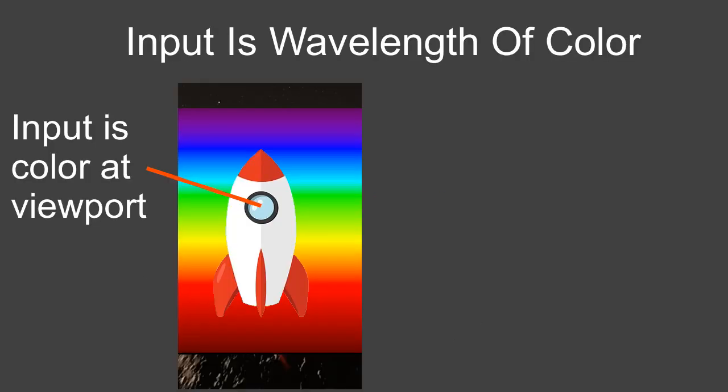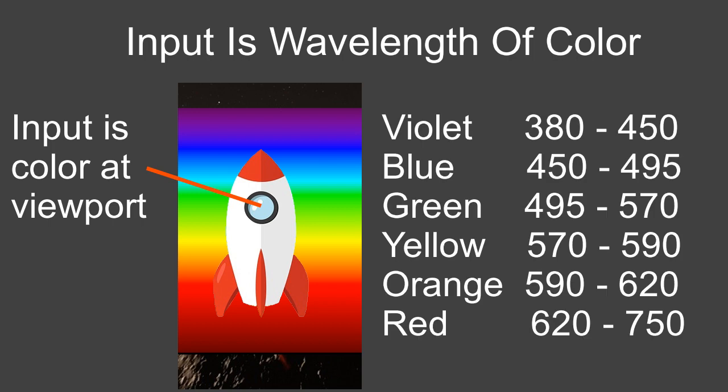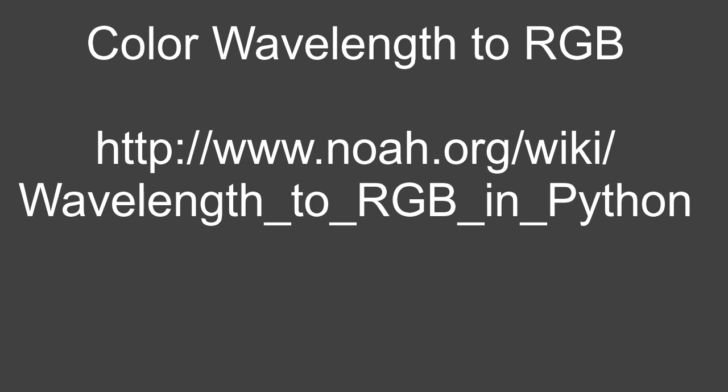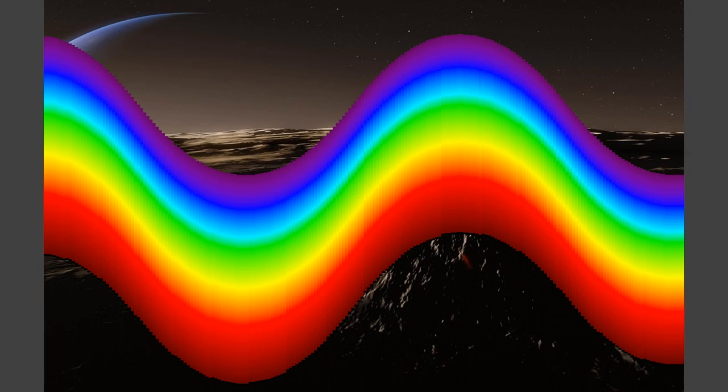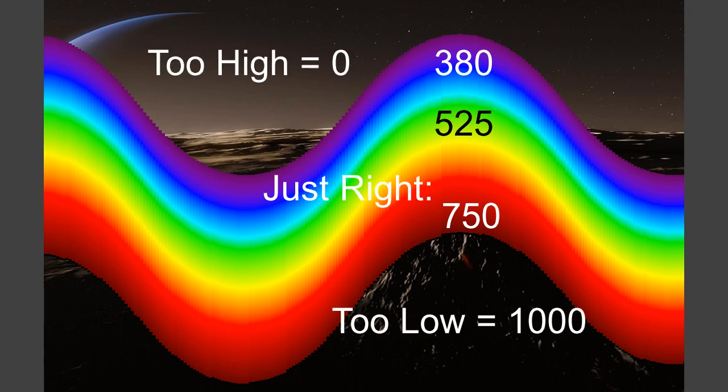Well, the input is simple. It is the wavelength in nanometers of the color that the viewport is currently in. Visible light has a wavelength that goes from about 380 nanometers to about 750 nanometers. 380 is violet, 750 is red, and between that is our friendly ROYGBIV rainbow. Luckily, I found a Python function to convert nanometers to RGB colors that Pygame could print to the screen. So the network gets the wavelength it is in at that moment. It could be anywhere from 380 to 750 if it is within the rainbow, and it will get 0 if it is above the rainbow or 1000 if it is below the rainbow.